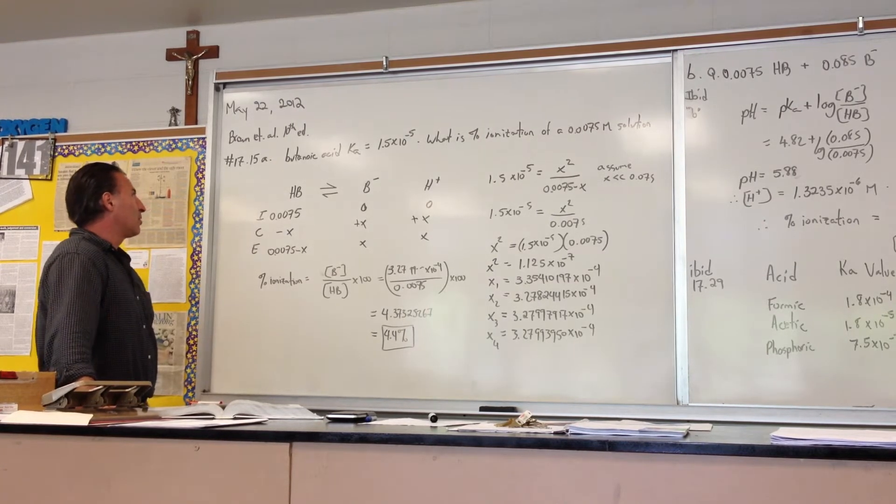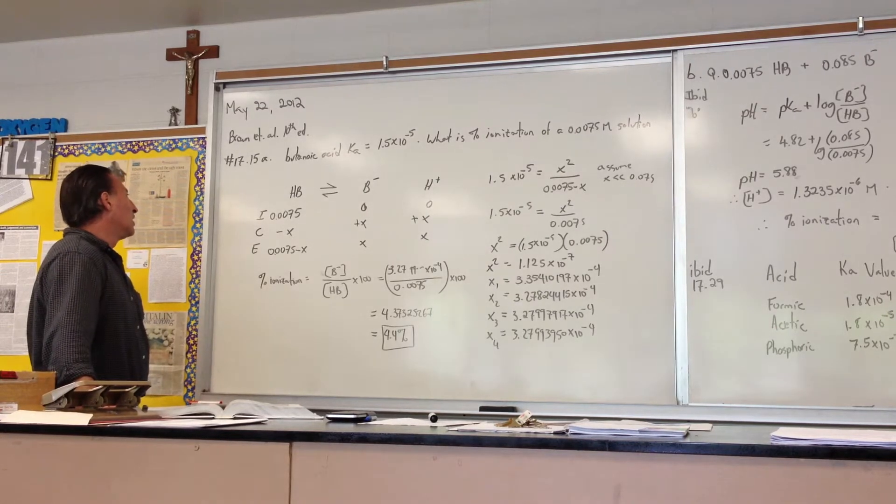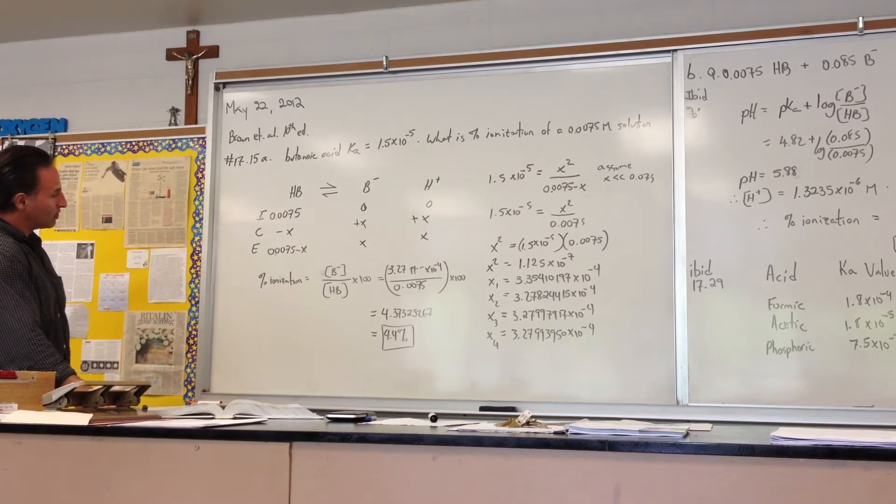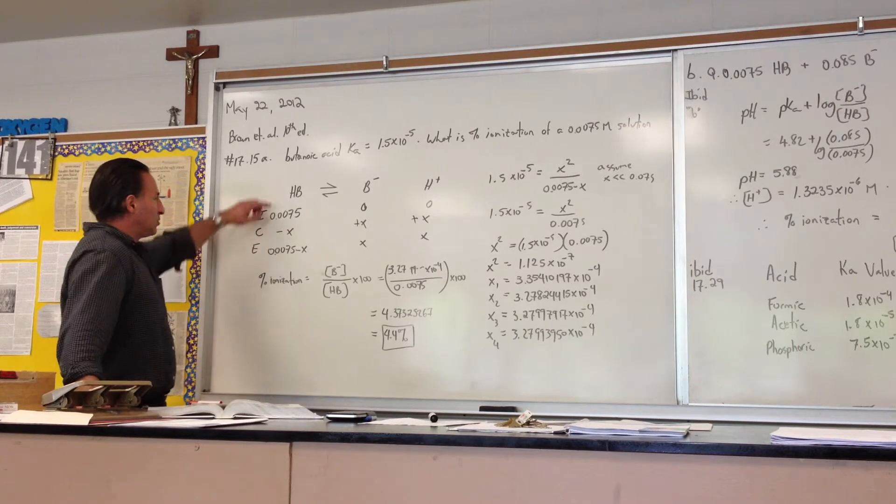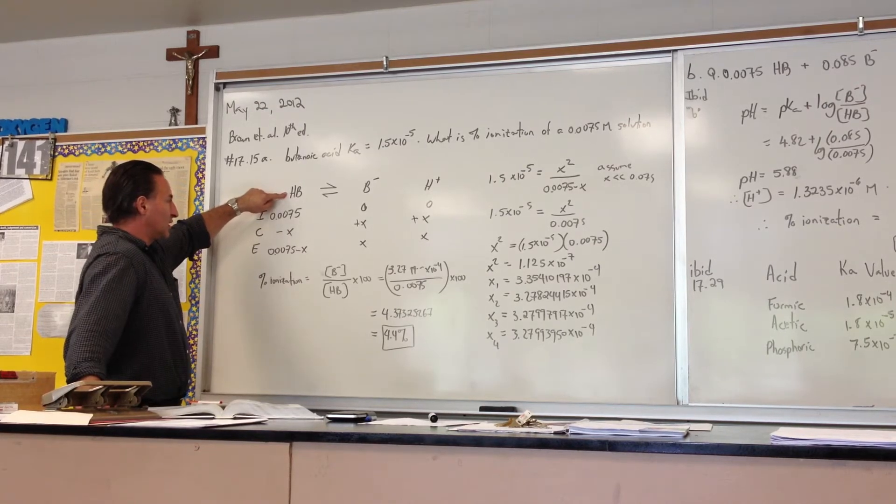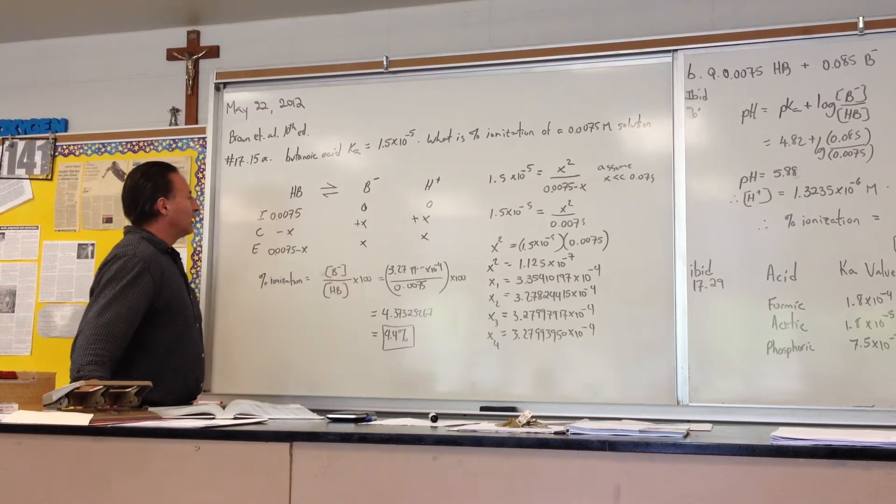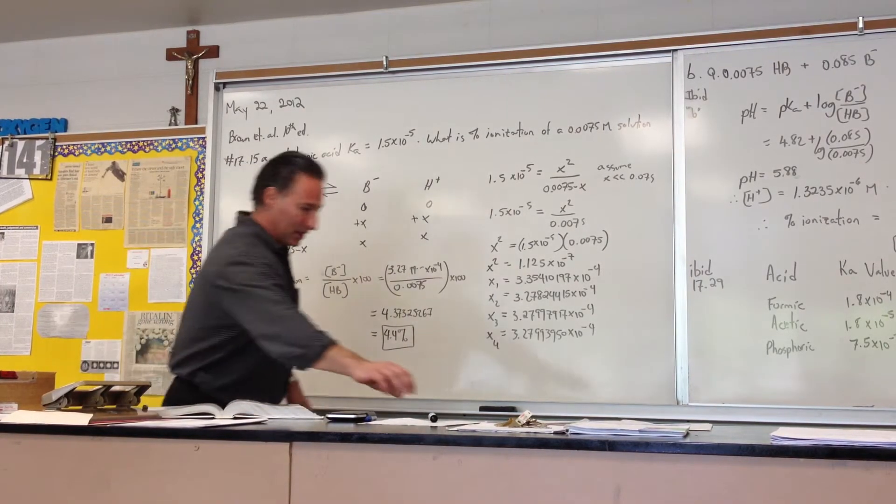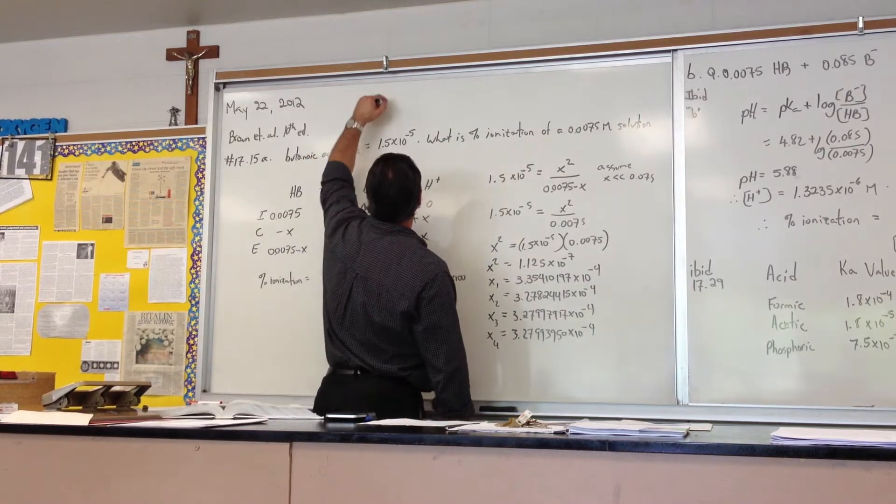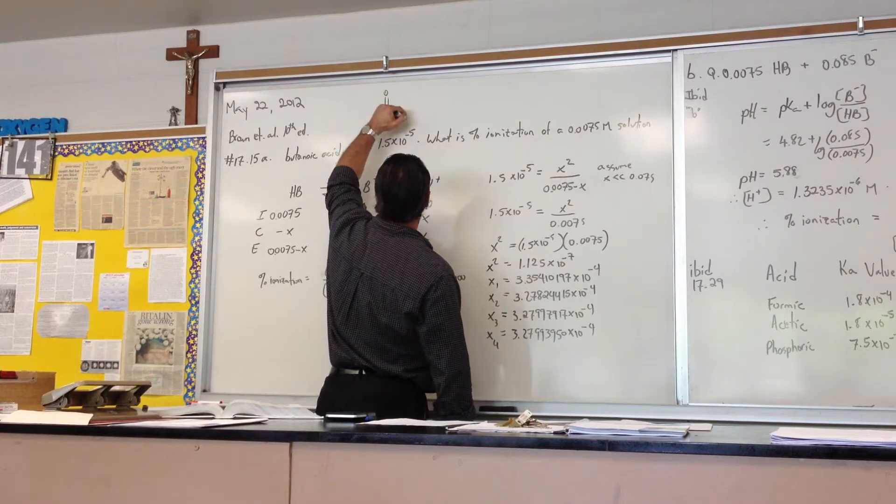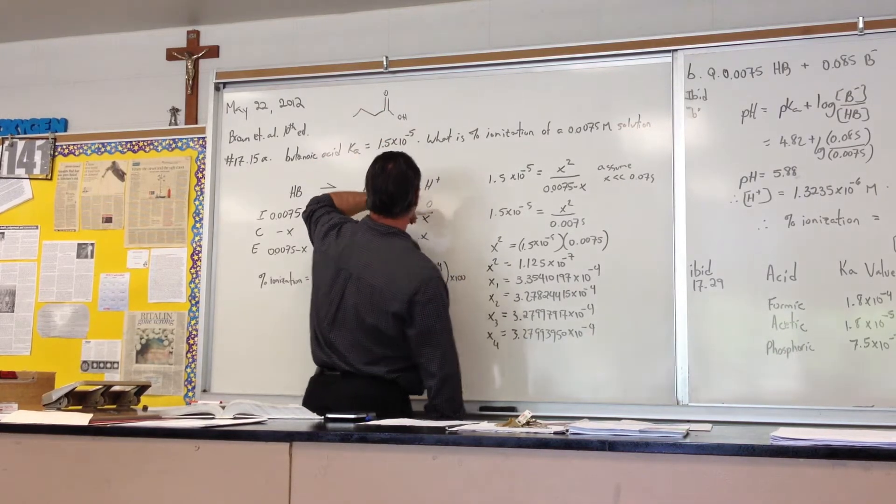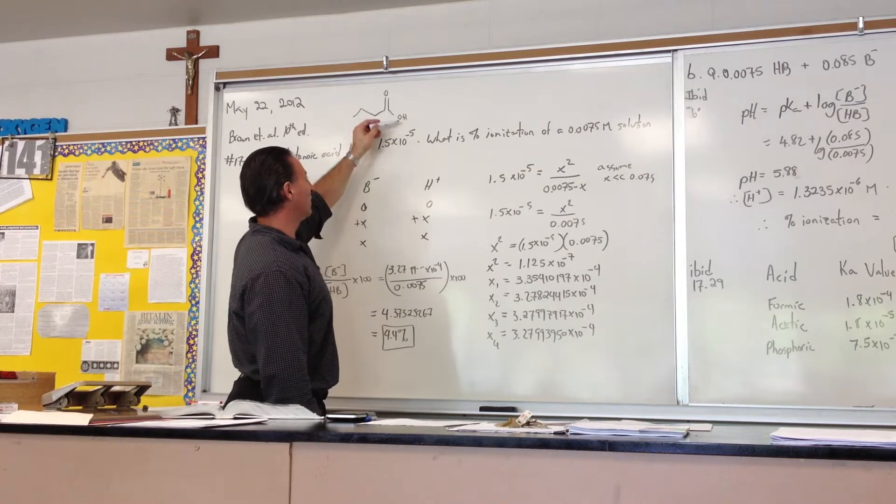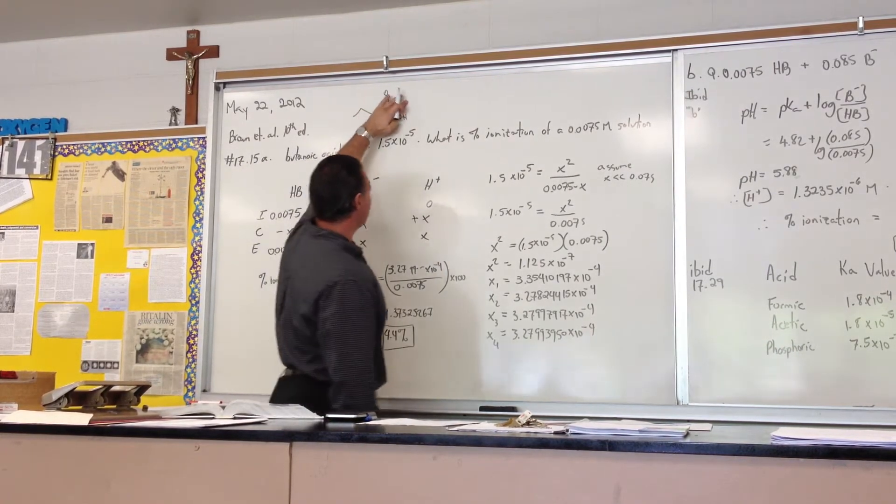In the first half of the problem, part A, which is number 17-15 in Brown, we construct an ICE table. HB symbolizes butanoic acid in the undissociated state. This is the butanoate anion, which I symbolize as B minus. Incidentally, butanoic acid looks like this in bond-line notation. One, two, three more carbons: CH3, CH2, CH2, C double bond O, and there's the ionizable proton.